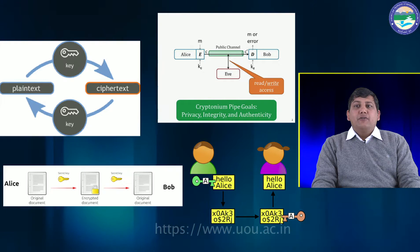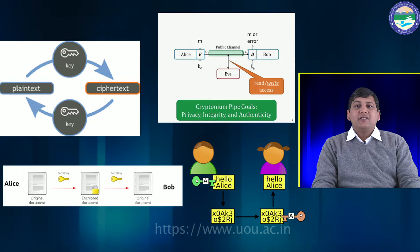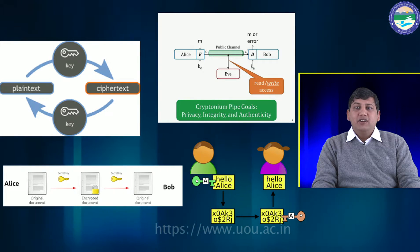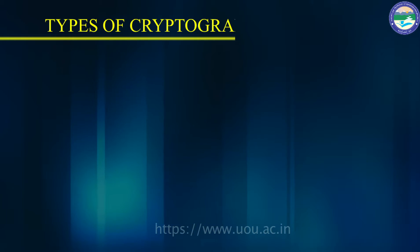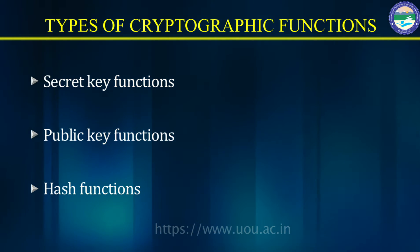The success of a cryptosystem essentially lies with keeping the encryption and decryption keys secret and private, as the encryption and decryption programs are public and known to everyone. Now we will discuss types of cryptographic functions.